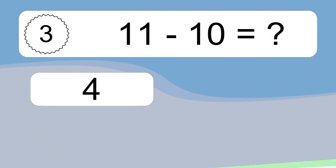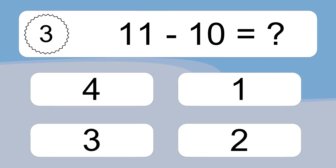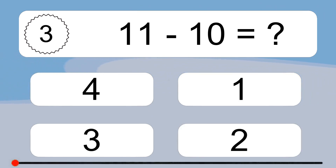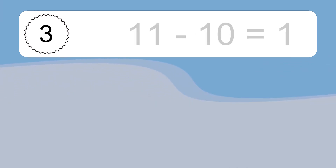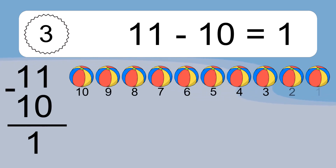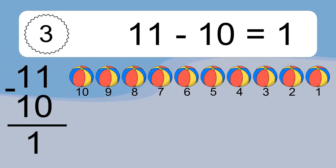11 minus 10 equals what? 11 minus 10 equals 1. Let's count it: 10, 9, 8, 7, 6, 5, 4, 3, 2, 1.